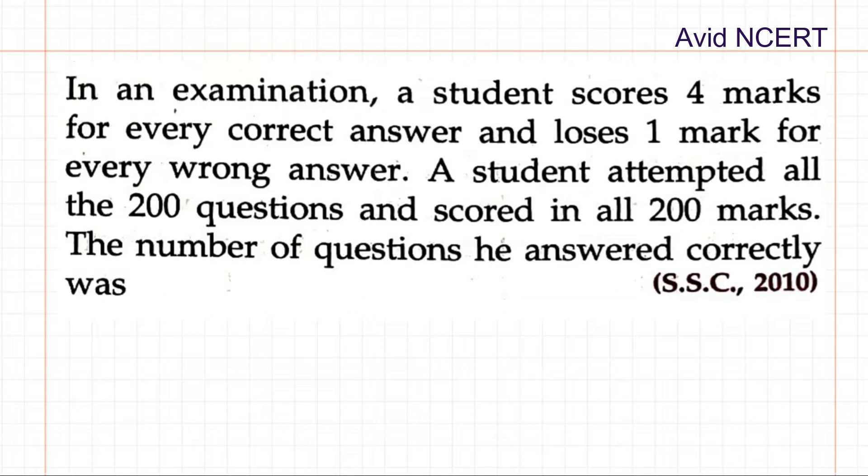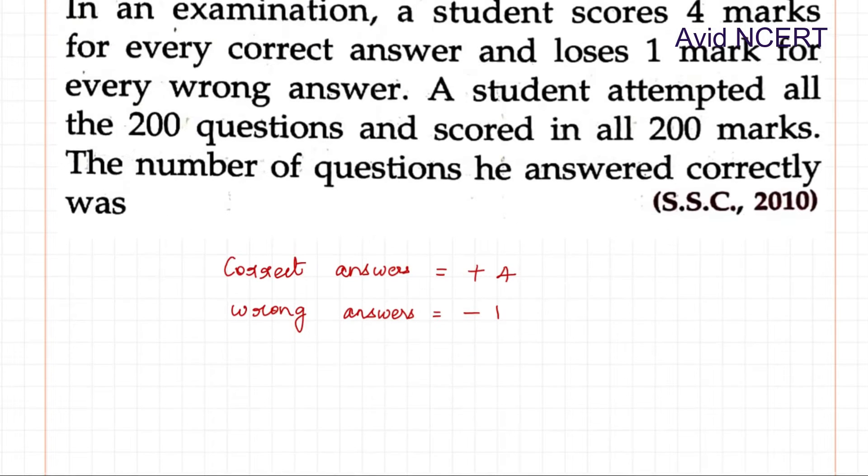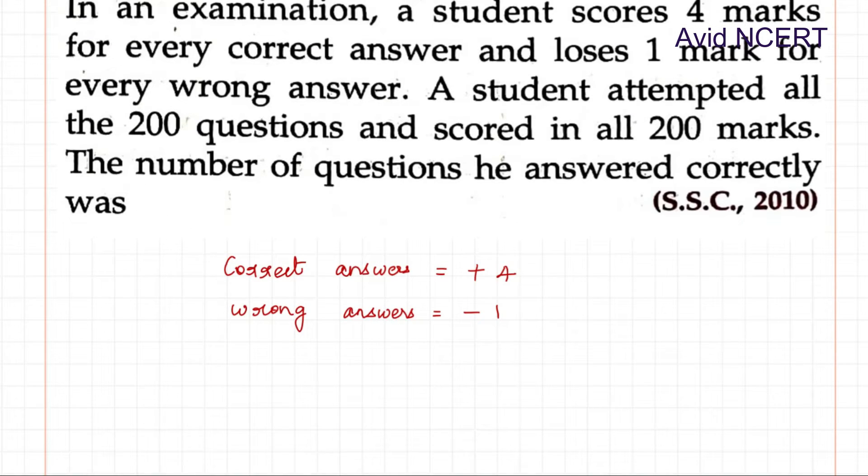For correct answers equals positive 4 marks, whereas for wrong answers, minus 1 mark. A student attempted all the 200 questions. Let the number of questions - total questions attempted is 200.